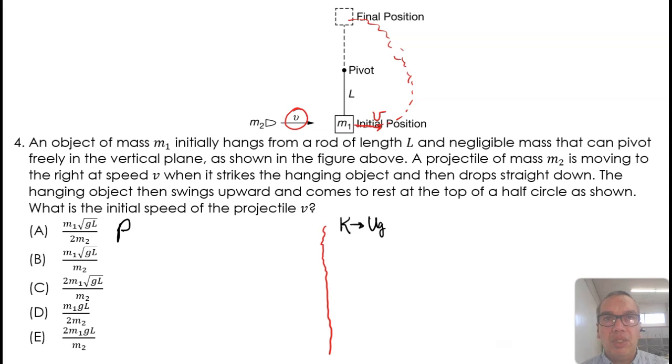Let us call the velocity of M1 immediately after the collision V1. Then we can use conservation of energy during the second part of the problem to find V1, which then can be used in the equation of conservation of the momentum for the whole system.